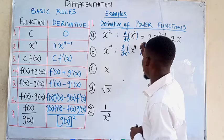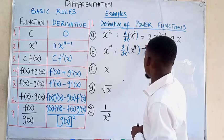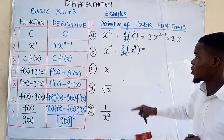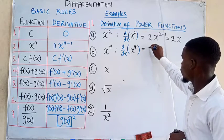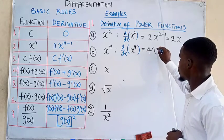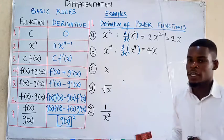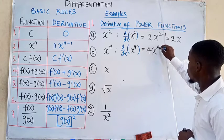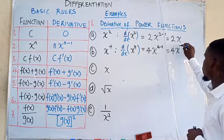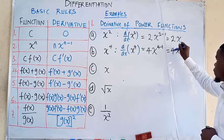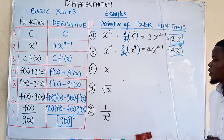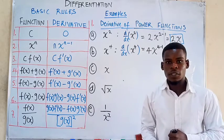Next we differentiate x to the fourth power. Applying the power rule, we bring down the 4, write x, then subtract 1 from the power: 4 minus 1 gives us 3. So the derivative is 4x raised to the power 3. That is the derivative of the second function.